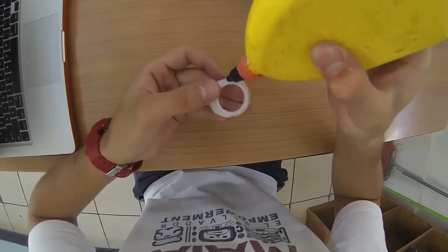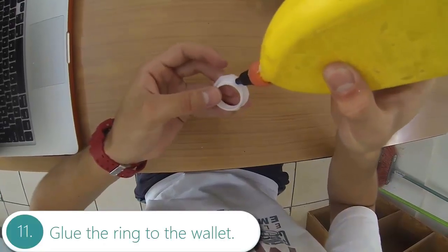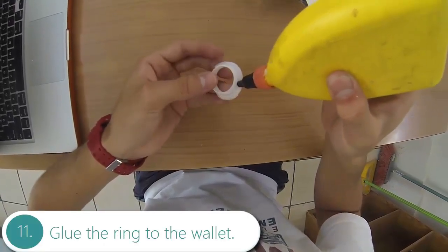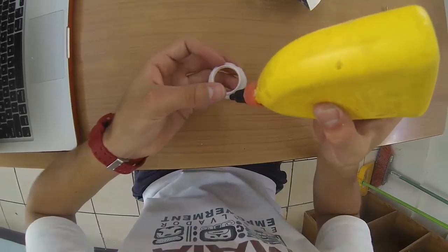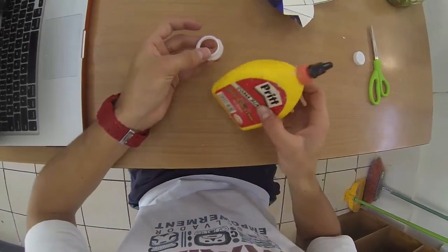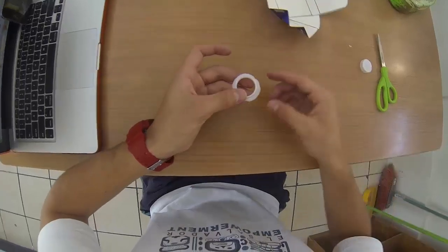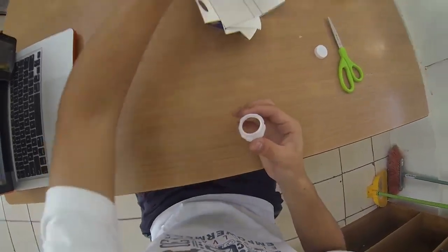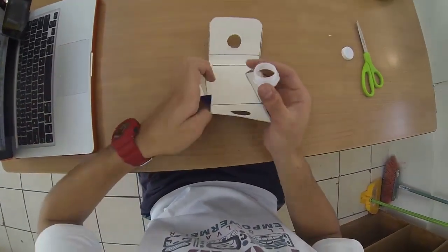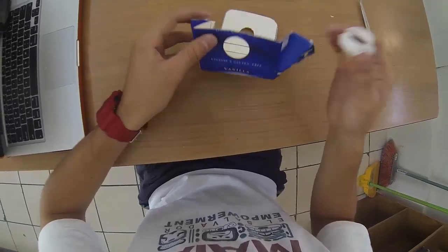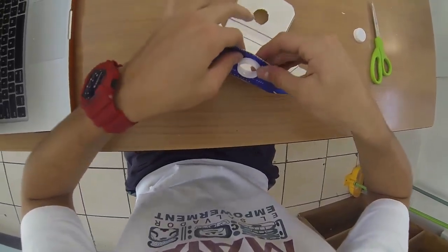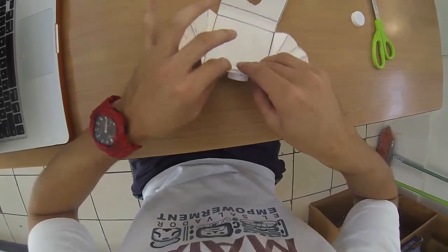This will be your last step. For step 11, glue the plastic ring back to the wallet and close it. Make sure you do it the way we're showing it right now. You don't want to make a mistake and have to do it again, do you?